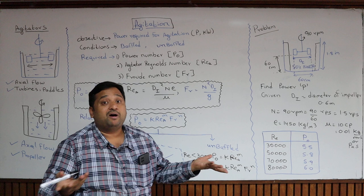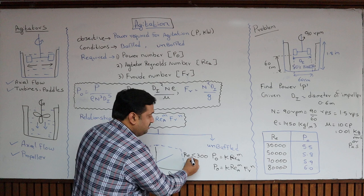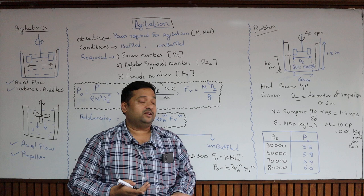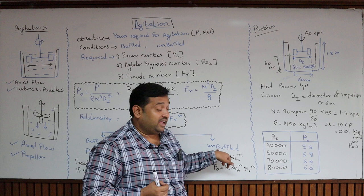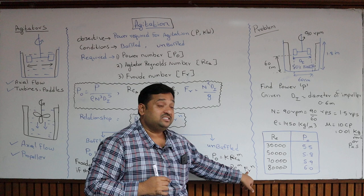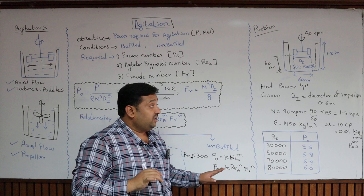For an unbaffled tank there are no baffles, so vortex formation takes place and you must consider the Froude number. However, if the agitator Reynolds number is less than 300 — a slowly revolving system — even without baffles, vortex formation will not occur, so you do not need the Froude number. Once the Reynolds number is greater than 300, vortex formation takes place in the unbaffled tank and you must consider the Froude number. With k, m, n, Reynolds number, and Froude number, you get the power number, and from that you calculate the power.